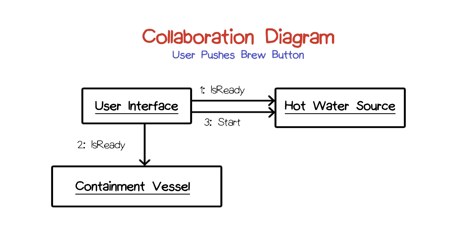Martin expresses these steps using a UML collaboration diagram. Recall that a collaboration diagram was like an object diagram, but the lines between the objects indicated operations, and the lines were numbered, indicating the order of the operations. In this case, we had the steps of the user interface getting the request from the user with the brew button, then asking the hot water source whether it's ready, then asking the containment vessel whether it's ready, and then starting the hot water source heating up the water. So there are three steps labeled one, two, and three here.